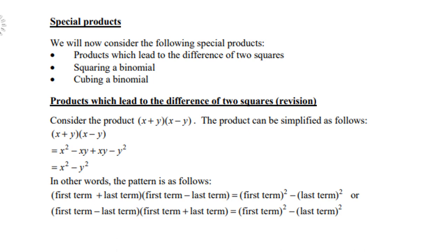You'll notice the two binomials are very similar — the only difference is a plus and a minus. Using the FOIL method you get x² − xy + xy − y². The middle terms cancel, leaving x² − y². This is why we call it the product which leads to the difference of two squares.